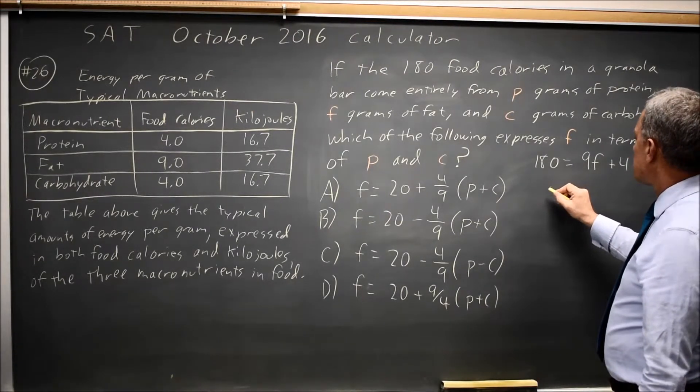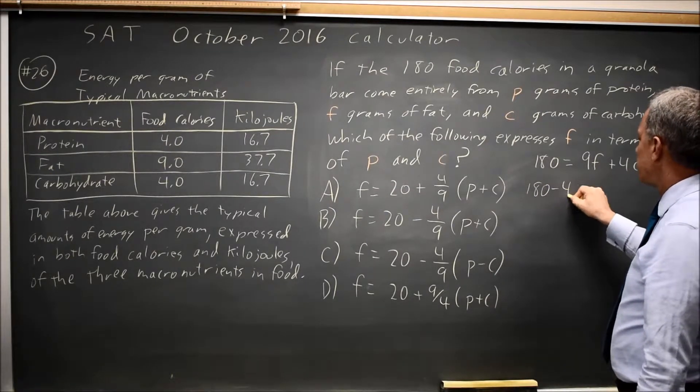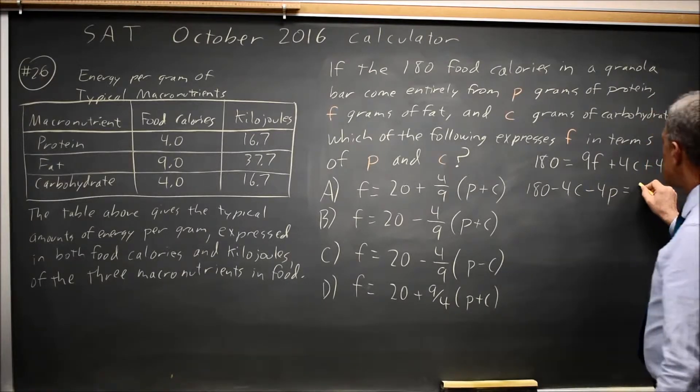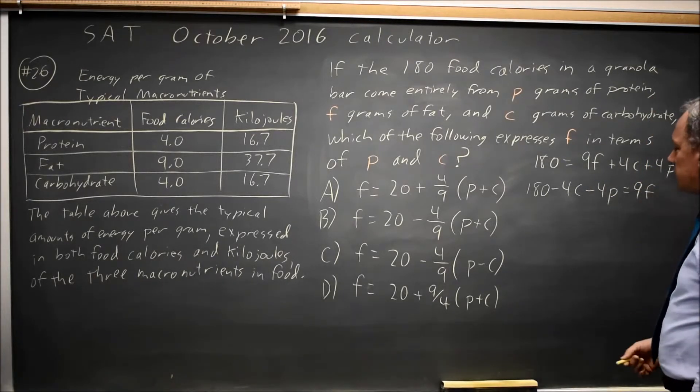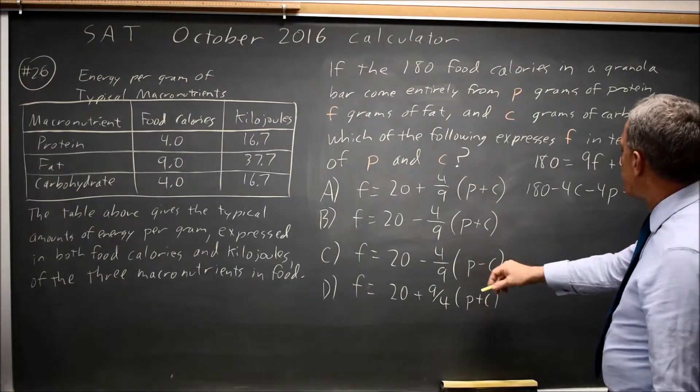And I want to solve for F, so let's subtract the C and P terms. 180 minus 4C minus 4P equals 9F, and divide through, actually all our choices group the P and C.